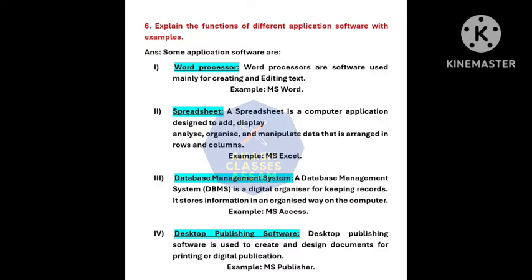Question number six: Explain the functions of different application software with examples. Some application software are: word processor, spreadsheet, database management system, and desktop publishing software. Word processors are software used mainly for creating and editing text — for example, Microsoft Word. A spreadsheet is a computer application designed to add, display, analyze, organize, and manipulate data arranged in rows and columns — for example, Microsoft Excel. A database management system is a digital organizer for keeping records; it stores information in an organized way on the computer — for example, Microsoft Access. Desktop publishing software is used to create and design documents for printing or digital publication — for example, Microsoft Publisher.